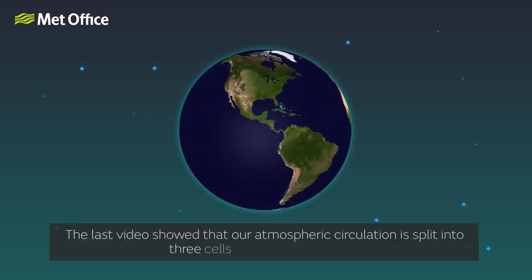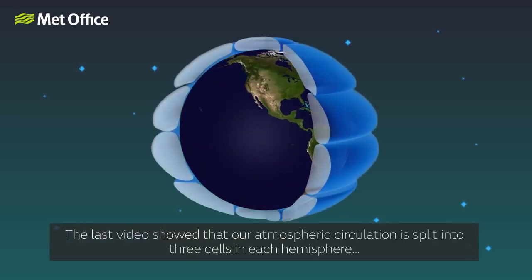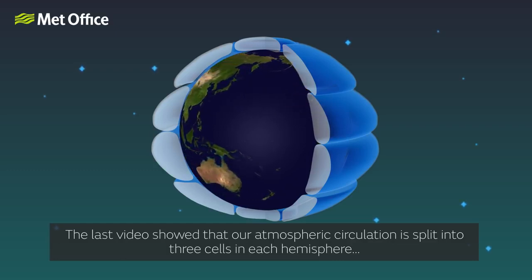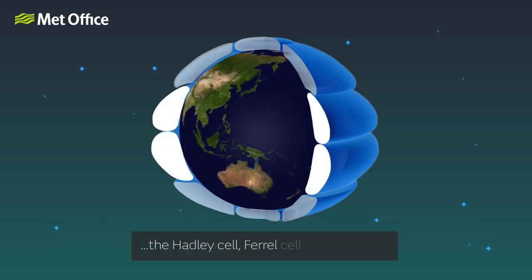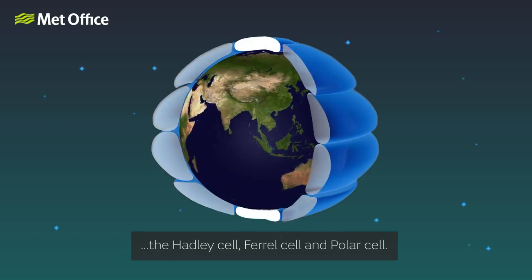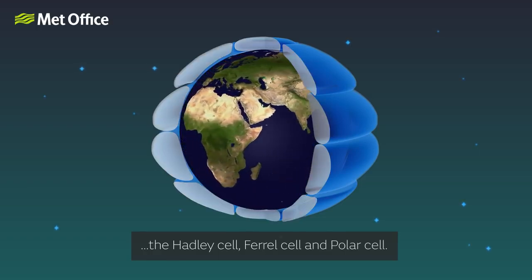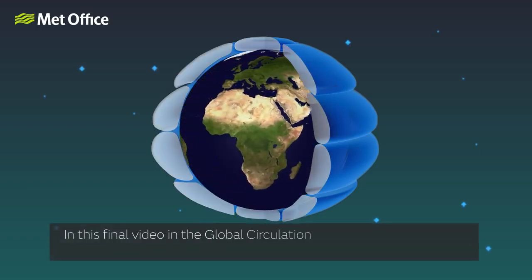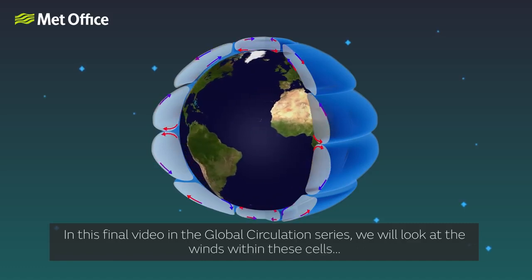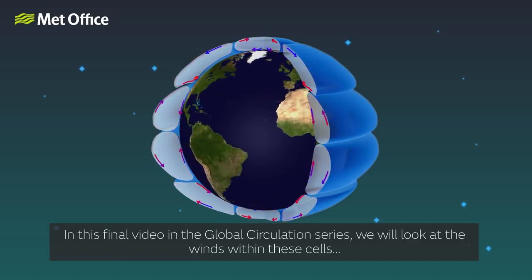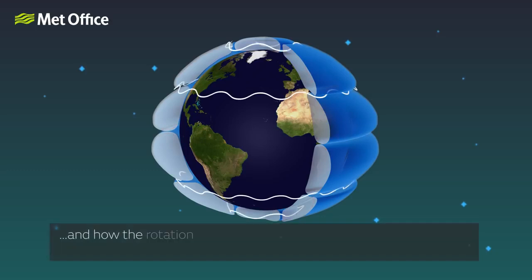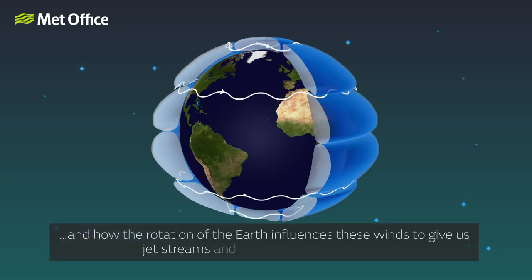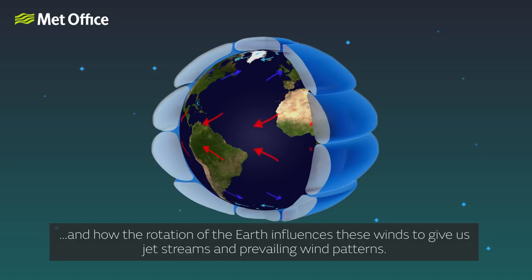The last video showed that our atmospheric circulation is split into three cells in each hemisphere: the Hadley cell, Ferrell cell, and polar cell. In this third video in the global circulation series, we will look at the winds within these cells and how the rotation of the earth influences these winds to give us jet streams and prevailing wind patterns.